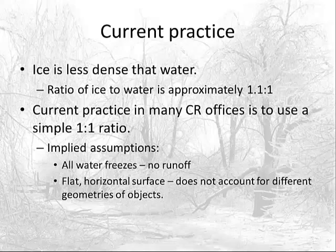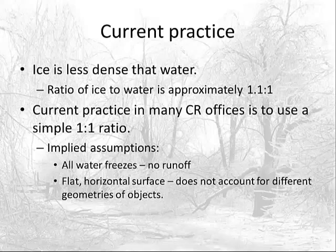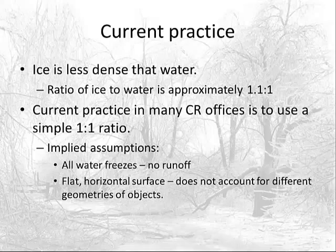That got me thinking about what we could change. The current practice, at least in our office in Sioux Falls, is that we basically use a one-to-one ratio on ice to water. So if we produce a quarter inch of liquid, we go with a quarter inch of ice — that's our criteria for issuing an ice storm warning. But ice is less dense than water and the ratio of ice to water is approximately 1.1 to 1. Using that one-to-one assumption implies almost all water is freezing, there's no runoff regardless of temperature, and we're forecasting on a flat horizontal surface. That's a pretty big assumption.